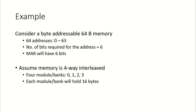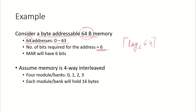We will now consider both techniques using an example. We assume a byte-addressable memory of 64 bytes, which means there are 64 addresses ranging from 0 to 63. How many bits are required for this address? 6 bits, since log₂(64) = 6. So the memory address register will hold 6 bits representing the main memory address.